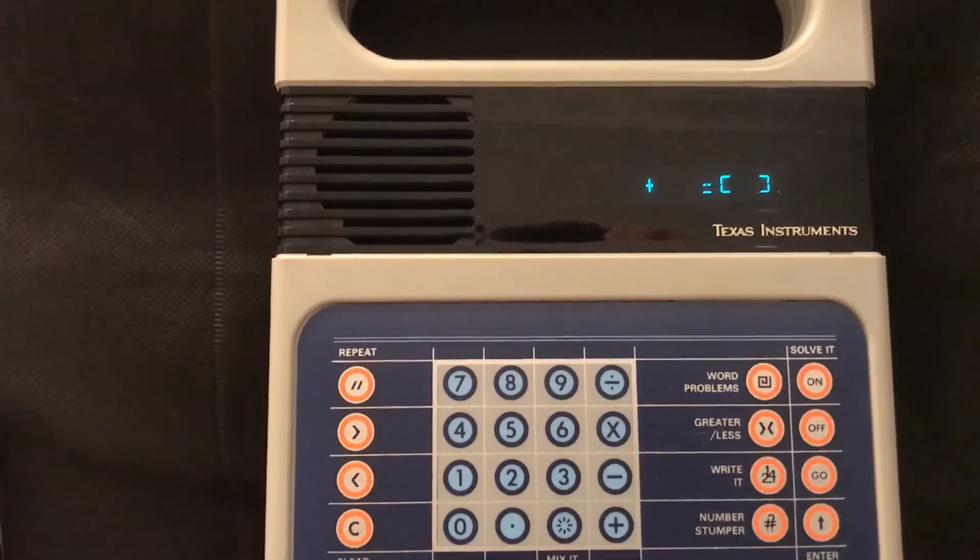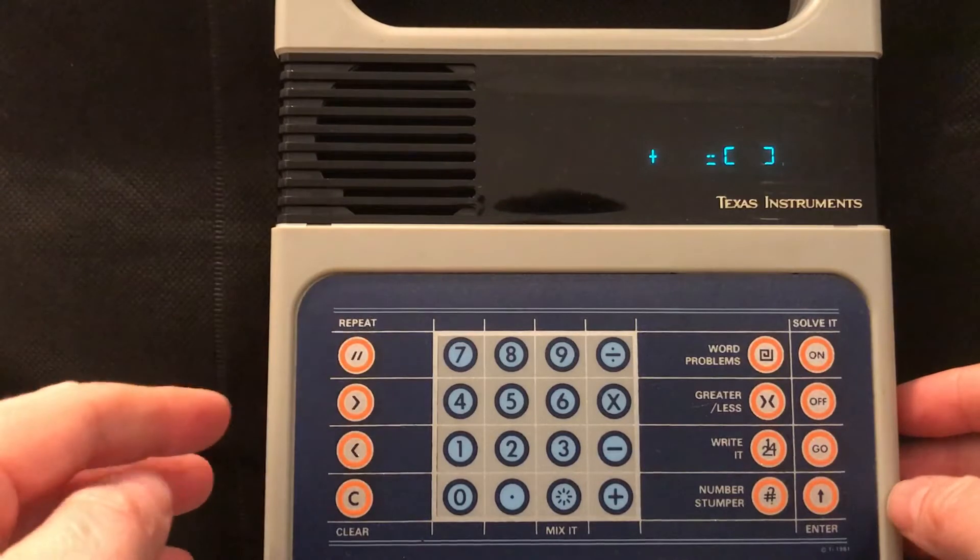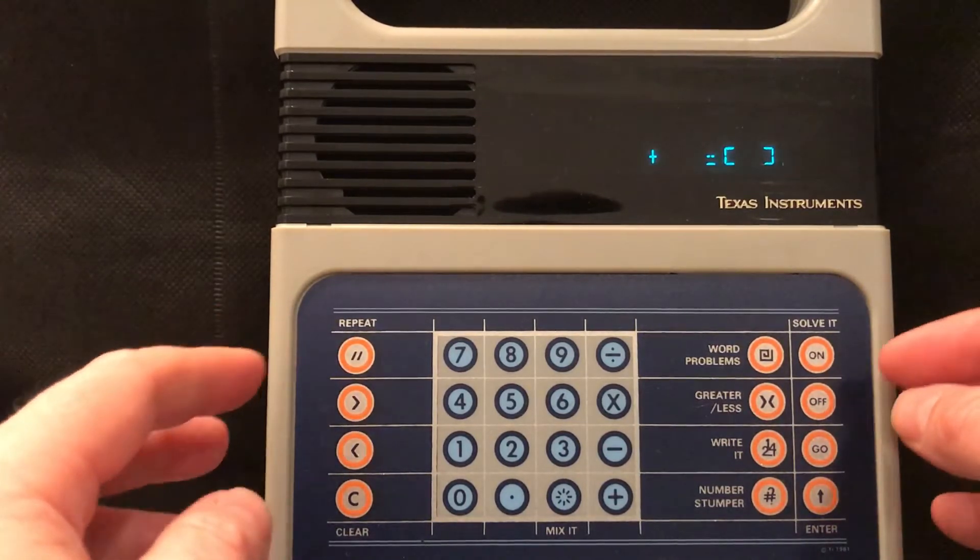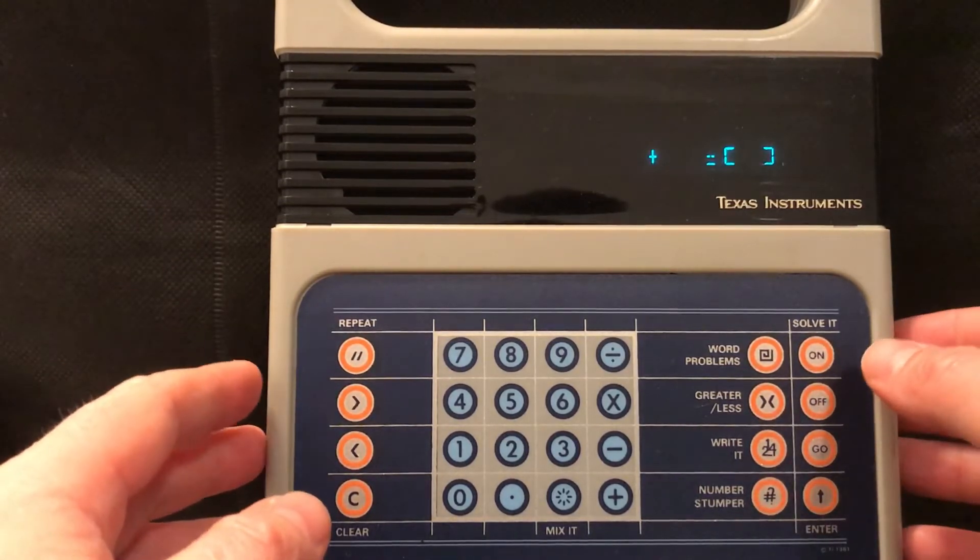The main thing about this which was revolutionary at the time was that it had this speaking chip in it and it sets you maths problems by telling you them and there's about five different games that it does all around maths so I'll show you quickly how they work.